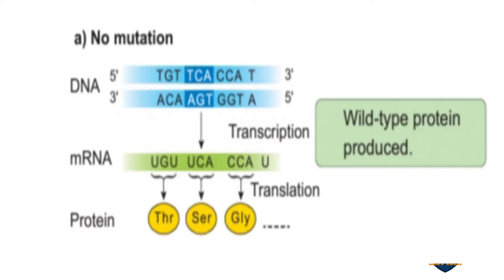You can see in this diagram the normal chromosomal DNA with 5' and 3' ends. After transcription, the mRNA codes for protein synthesis. This is the normal one where there is no mutation.